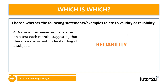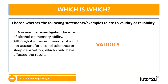Example four: a student achieves similar scores in a test each month, suggesting that there is a consistent understanding of a subject. Again, that's about reliability — consistent performance. And finally, example five: a researcher investigated the effect of alcohol on memorability. Although it impaired memory, she did not account for alcohol tolerance or sleep deprivation, which could have affected the results. That's about validity — a question mark over whether that study actually measured what it intended to measure.